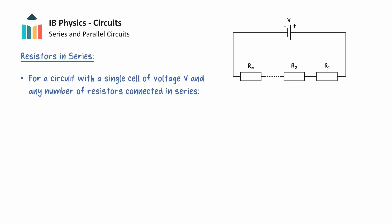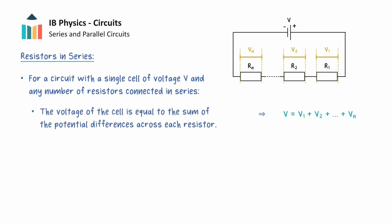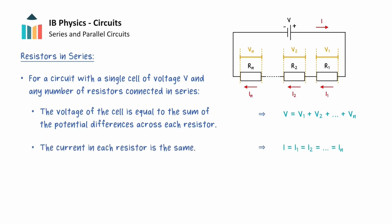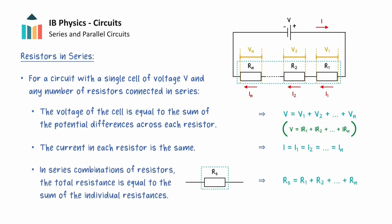What we have just discussed can be extended to any number of resistors connected in series. In particular, for a circuit that contains a single cell, the voltage of the cell will be equal to the sum of the potential differences across each resistor from the loop rule. We showed that the current in the series circuit must be the same everywhere, so the current in each resistor must also be the same. Because of this, the resistor with the greatest resistance will have the proportionally greatest potential difference across it. Furthermore, for any number of resistors in series, the total resistance is equal to the sum of the individual resistances. Because of this, adding resistors in series will decrease the current leaving the cell.